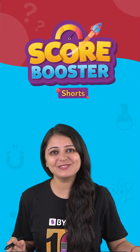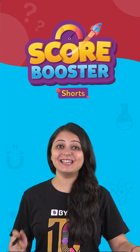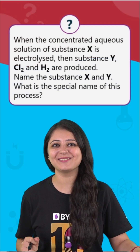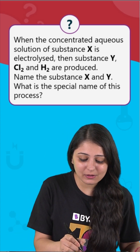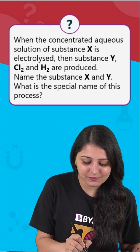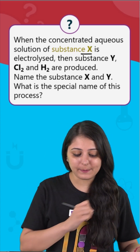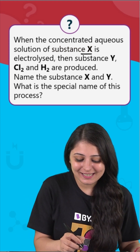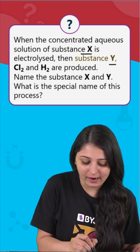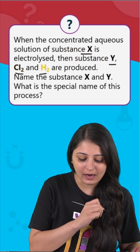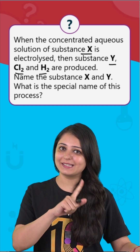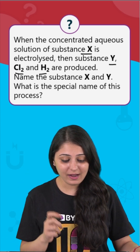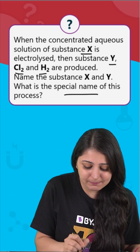Hey students, watch the video till the end to ace this question in your exam. The question says, when the concentrated aqueous solution of substance X is electrolyzed, then substance Y, Chlorine and Hydrogen are produced. Now we have to figure out what's X, what's Y and what's the special name of this process.